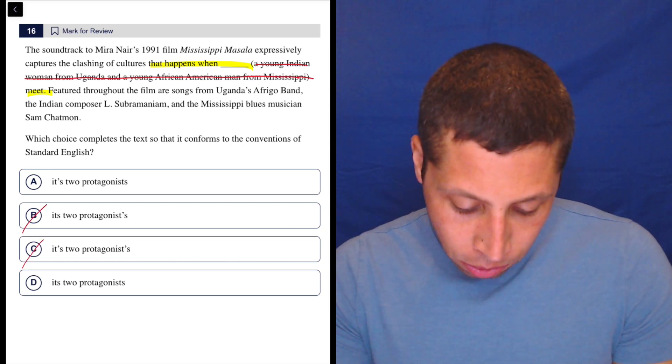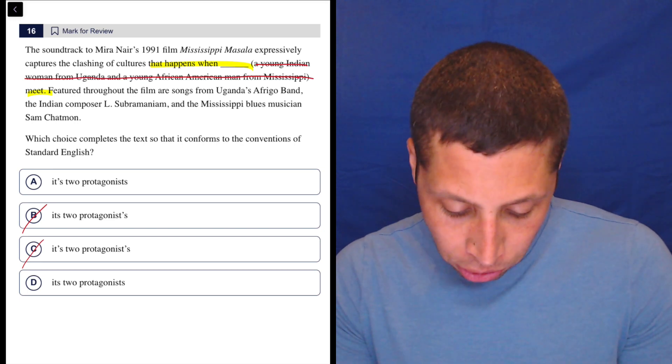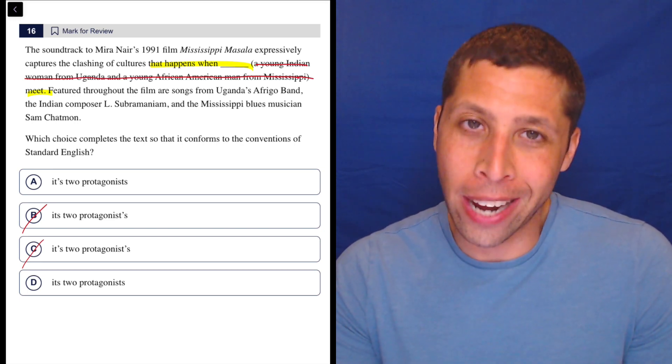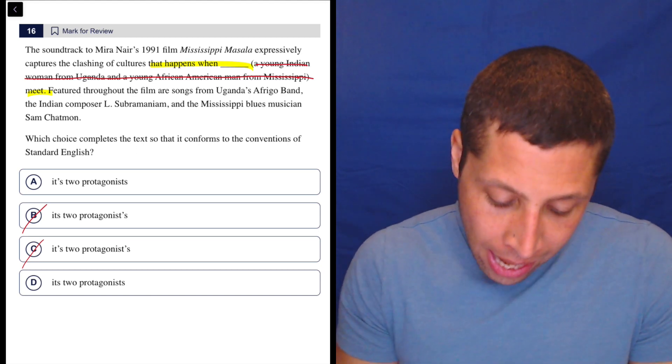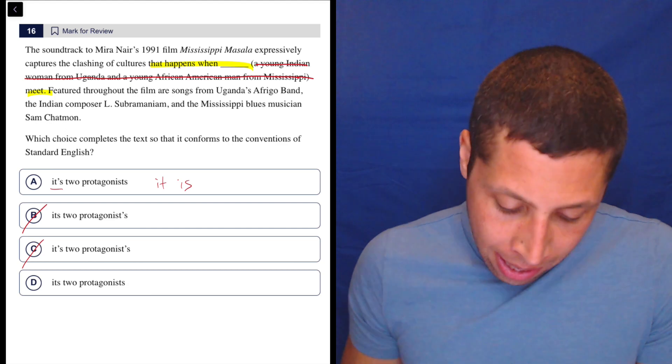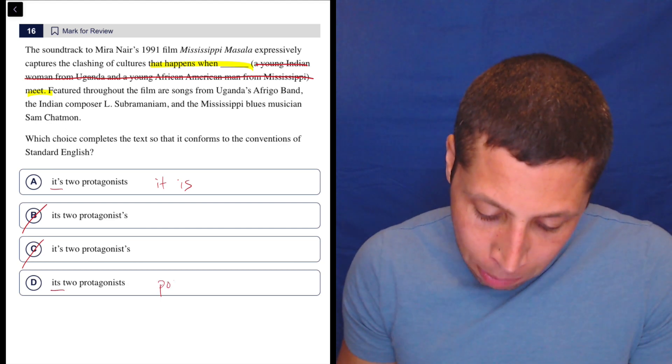Now we can think about the word it's, right? Is that going to be with an apostrophe or without? And this is one of those mistakes that you cannot make at your age. You need to know the difference. It's with an apostrophe is short for it is, and its without one is possessive.